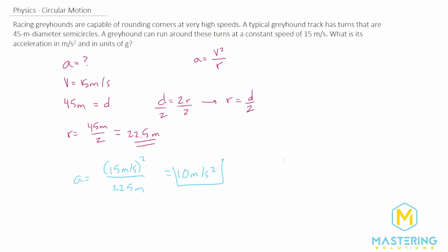And we need to convert that to g's as well. So we'll have 10 meters per second squared, and then we'll divide that by 9.8 meters per second squared to put it into g's. The meters per second squared will cancel.